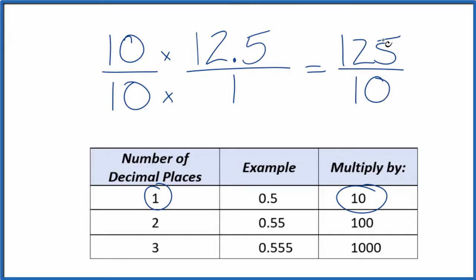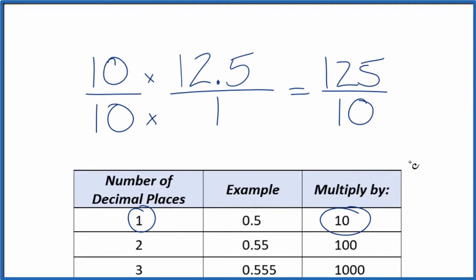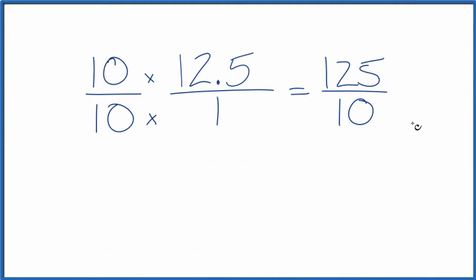But we can simplify this. Let's give ourselves some room. I could divide 5 into 125 and into 10. So 125 divided by 5 is 25, and 10 divided by 5 is 2.